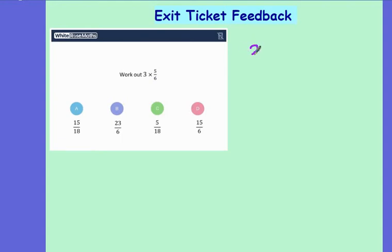Now we start by writing 3 as 3 over 1 times 5 over 6. Now we need to multiply our numerators together. 3 times 5 gives me 15. And multiply our denominators together. 1 times 6 gives me 6. So the correct answer was D.